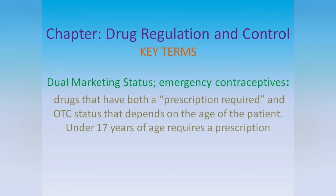Dual Marketing Status — Emergency Contraceptives: refers to drugs that have both a prescription-required and OTC status that depends on the age of the patient. Under 17 years of age requires a prescription.